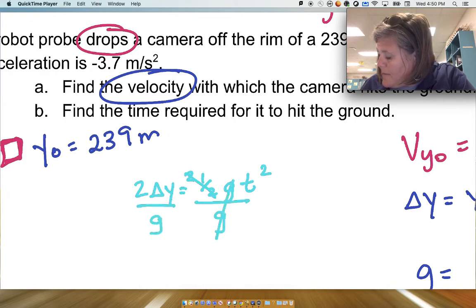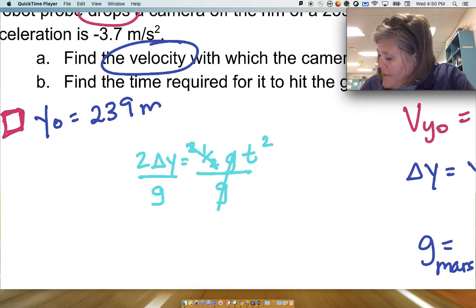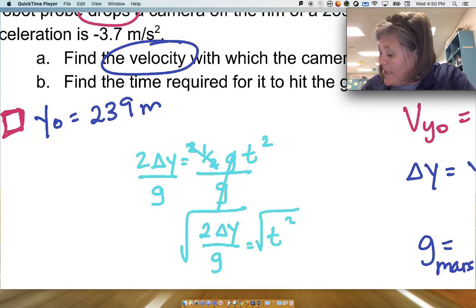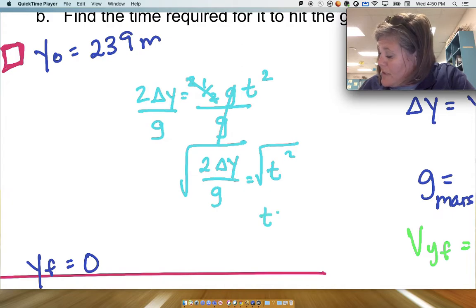And then divide by g, and so I have 2 delta y over g equals t squared, and then I've got to take the square root. So t here is the square root of 2 delta y over g.